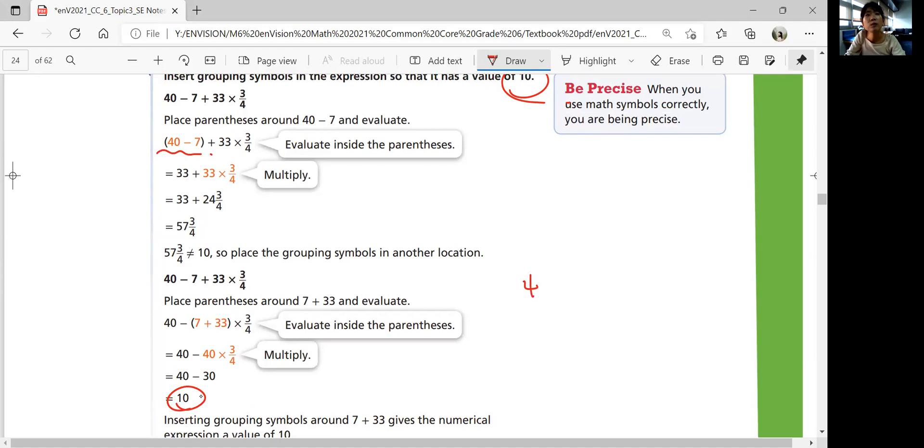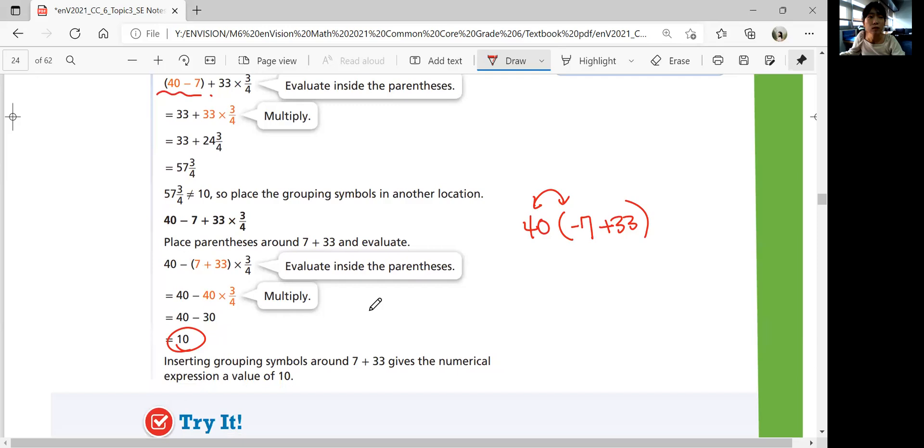If you grouped 40 and then minus 7 plus 33, that becomes a multiplication. You cannot do that. Do not change your order of operations. When you use math symbols correctly, you are going to be precise. So this is the correct group that we want in order to get 10 as an answer.